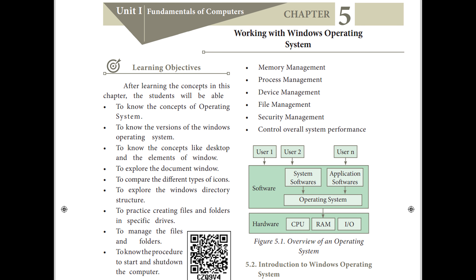In the fifth chapter, you will start to work with the operating system. In that chapter, you will be learning how to use the computer, how the operating system works, and how you have to start with the computer. There you will have the procedure for how to use the mouse and how to start the Windows desktop. In this fifth chapter, we will be learning about icon, folder, desktop, the menus, menu bar, toolbar, work areas, and scroll.